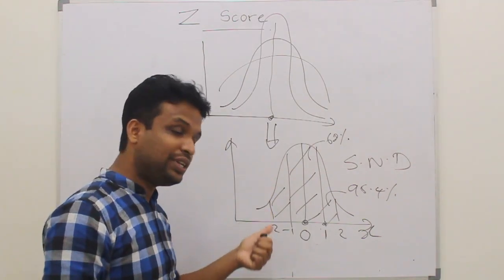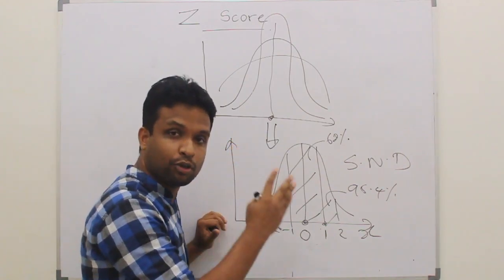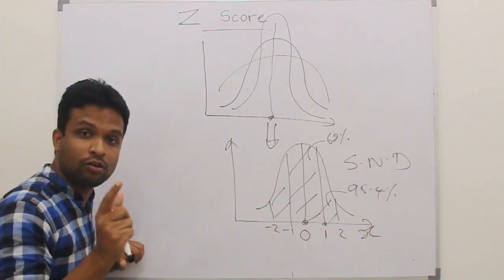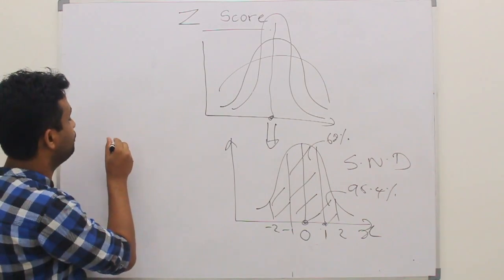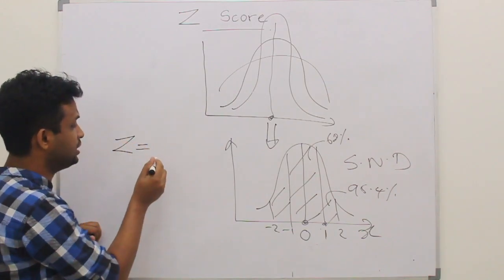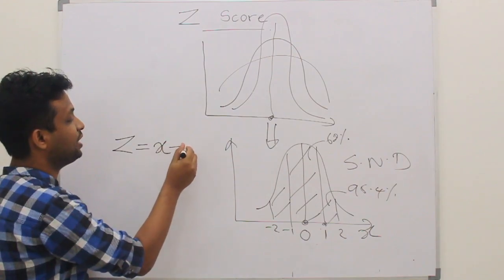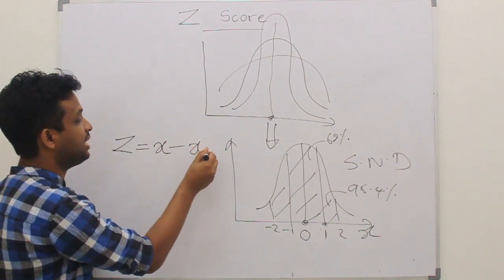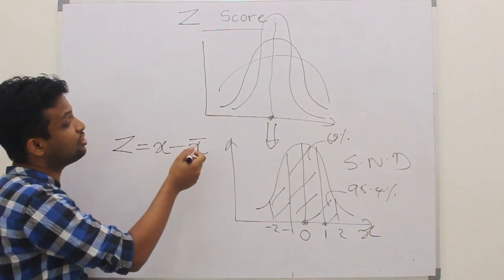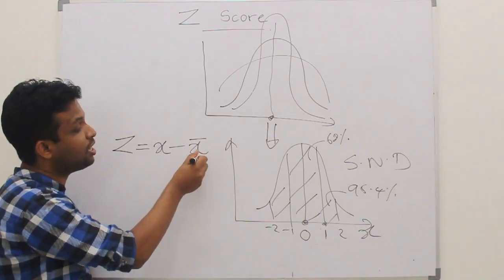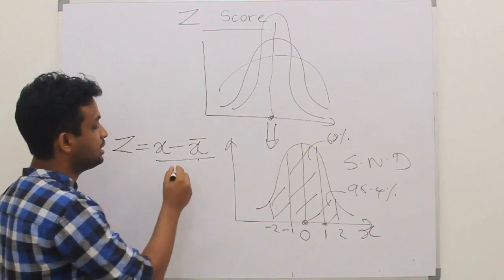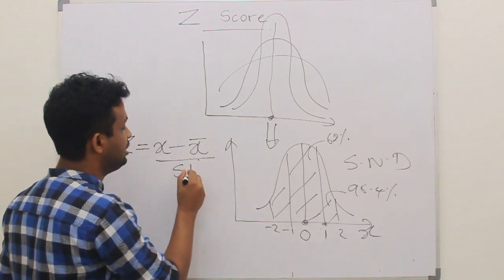Now I am going to discuss this specific process. For that you need to know the formula for Z score. Z score equals x minus x-bar, divided by standard deviation. If this is a sample you use x-bar; if this is a population, instead of x-bar you use mu.